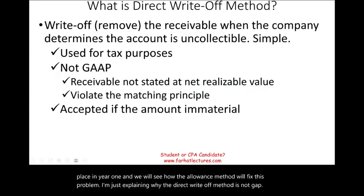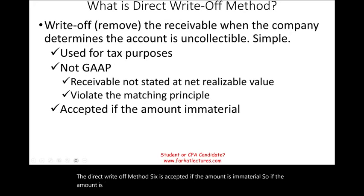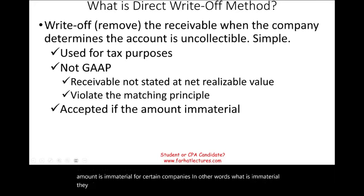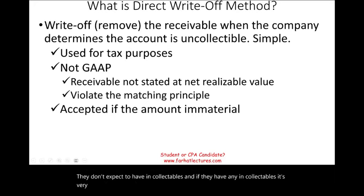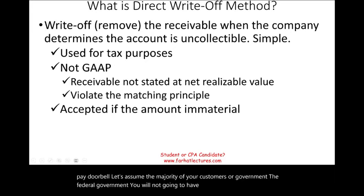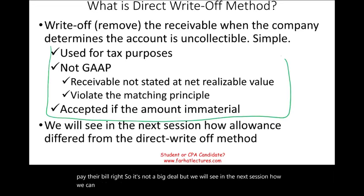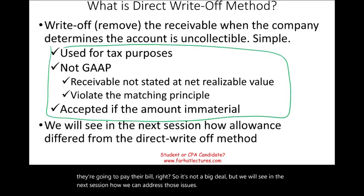The direct write-off method is accepted when the amount is immaterial. If a company doesn't expect to have uncollectibles, or any uncollectibles are a very small amount, then it's immaterial. For example, if the majority of your customers are government entities — the federal government always pays their bills — you won't have uncollectibles. In the next session, we'll see how the allowance method addresses these issues.